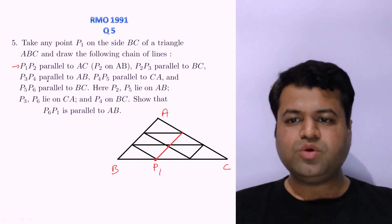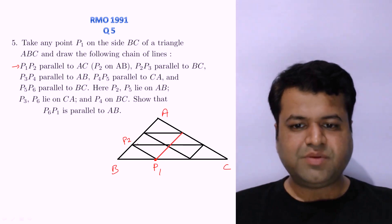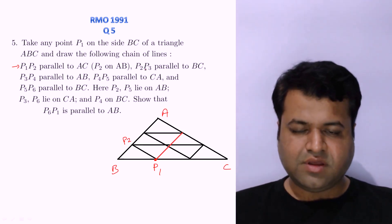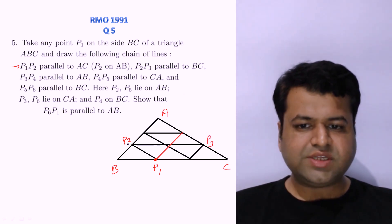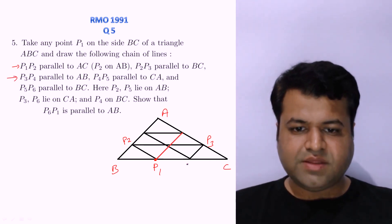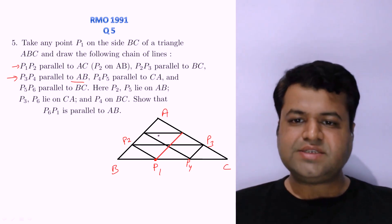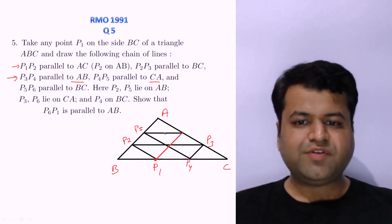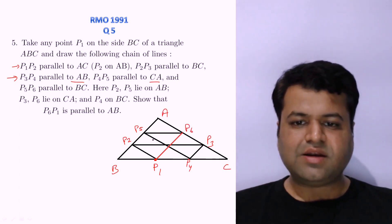Draw P1P2 parallel to AC. So this is P2, and P1P2 is parallel to AC where P2 is on AB. Now P2P3 is parallel to BC — so this is P3 and P2P3 is parallel to BC. Then draw P3P4 parallel to AB, and again P4P5 parallel to CA, and P5P6 parallel to BC.